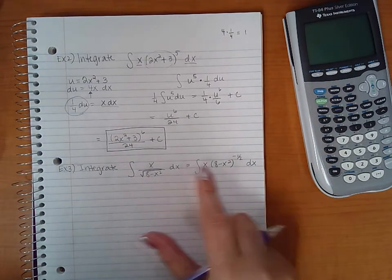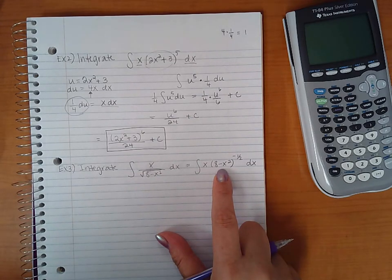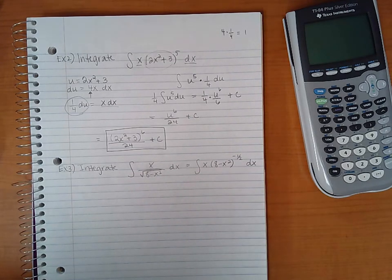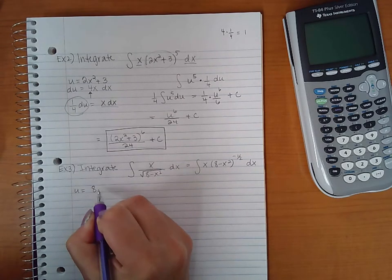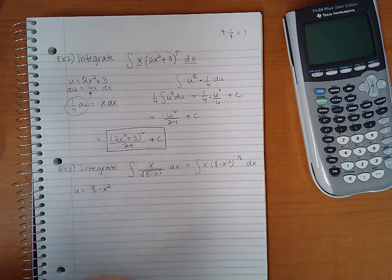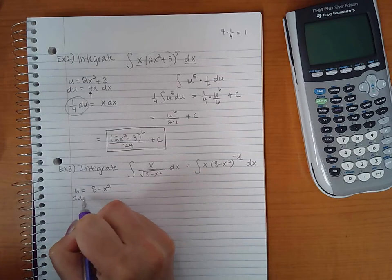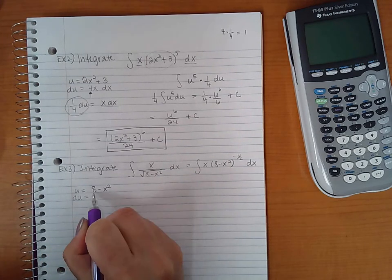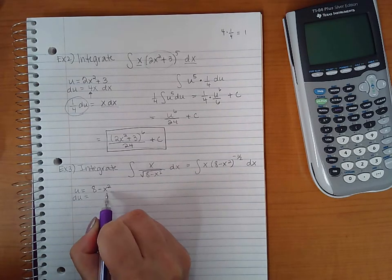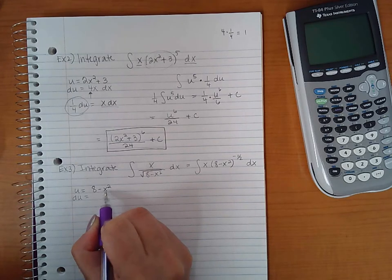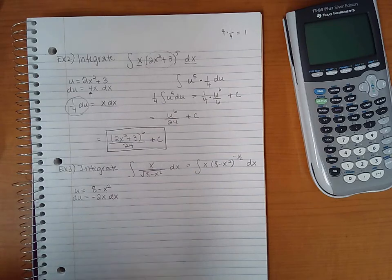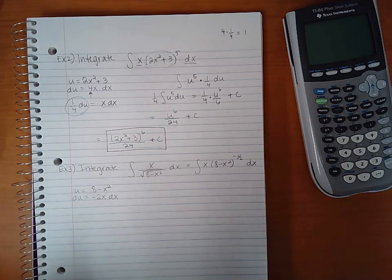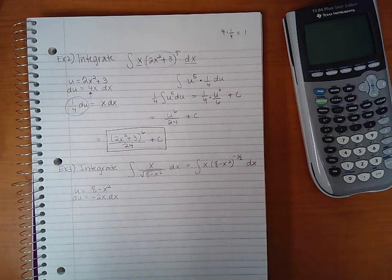So now it's a little bit, if it wasn't obvious before, it's a little more obvious now as to what u is going to be. So u is going to be what's in the parentheses, 8 minus x squared. And du is going to be the derivative of this. Derivative of 8 is 0. The derivative of negative x squared is negative 2x. And of course, we have to tag on the dx because we're differentiating with respect to an unknown variable.